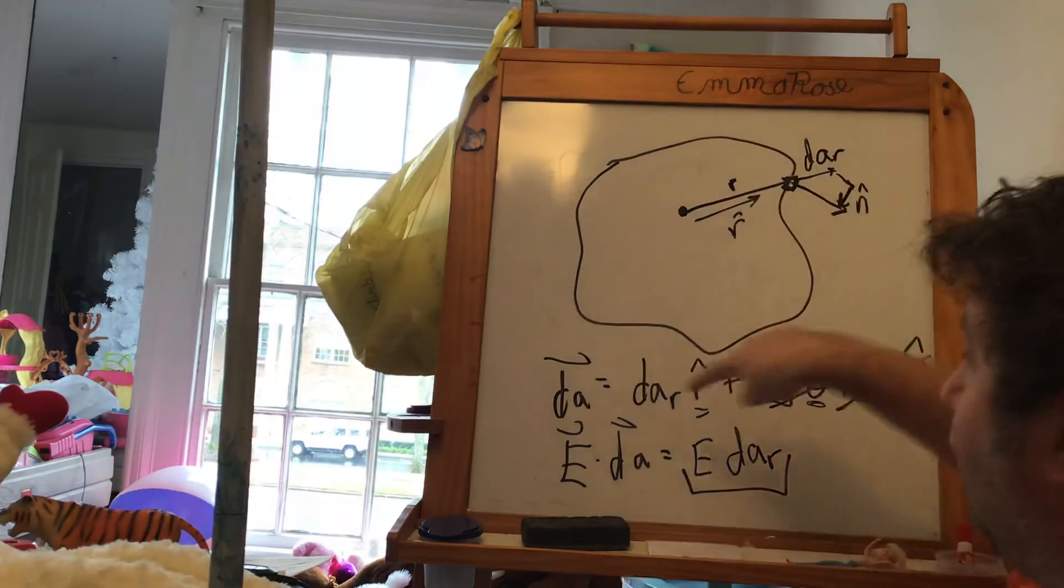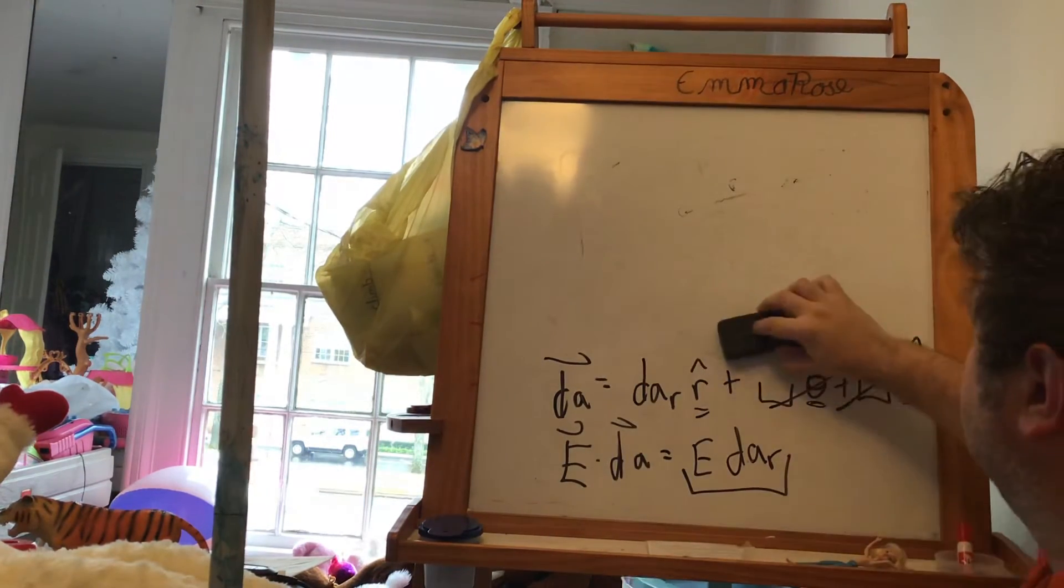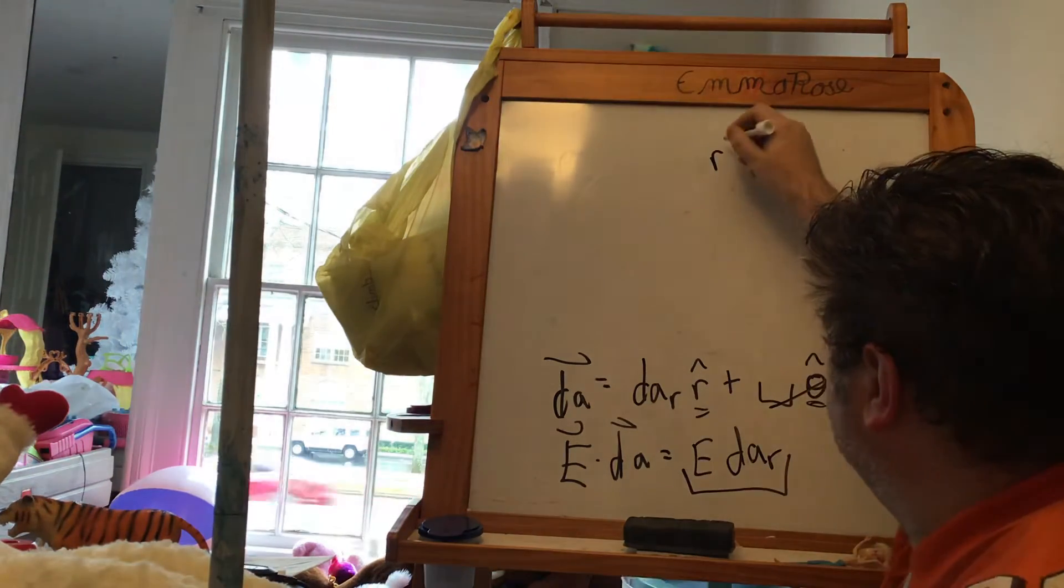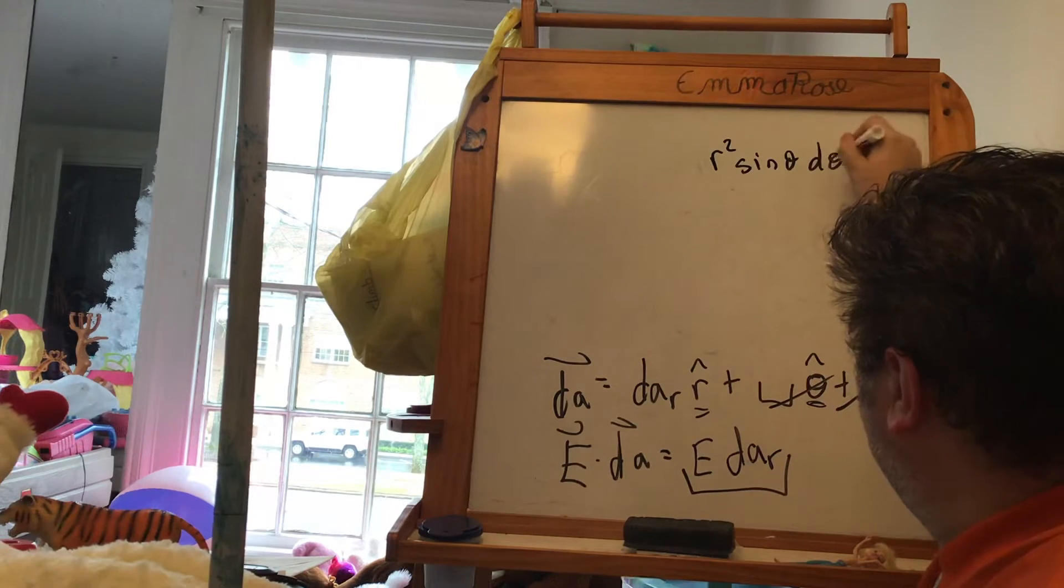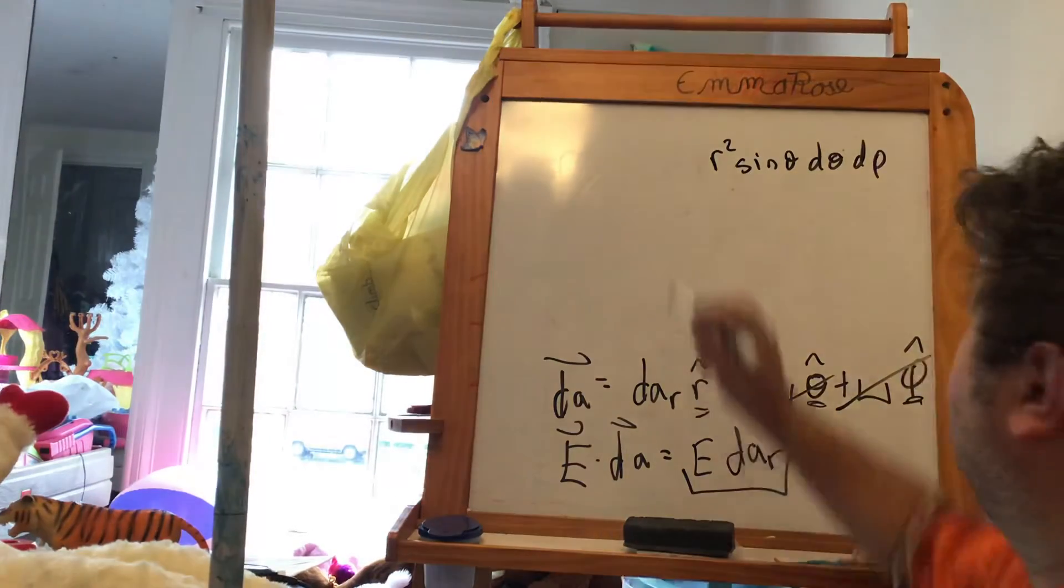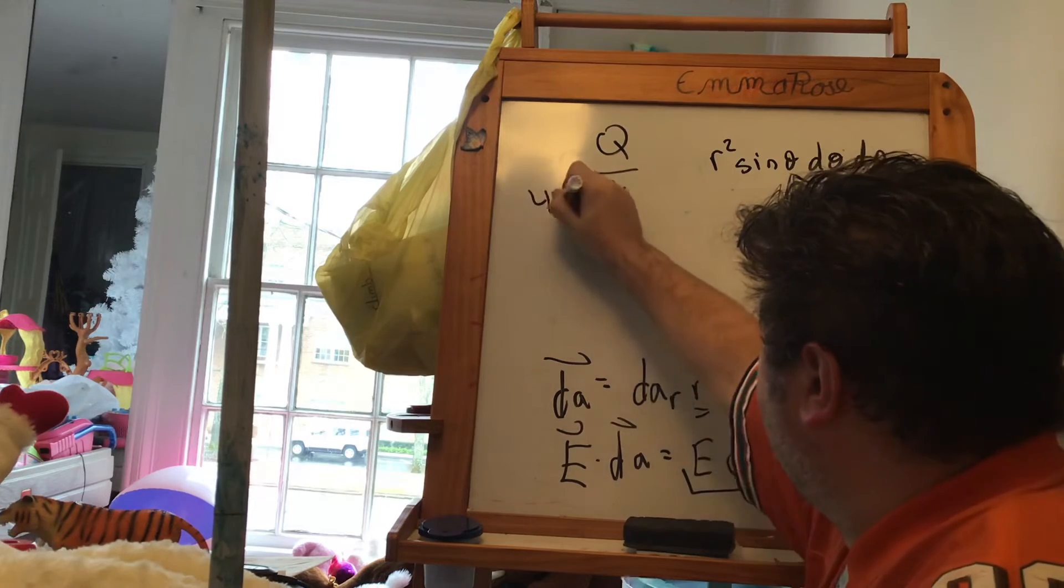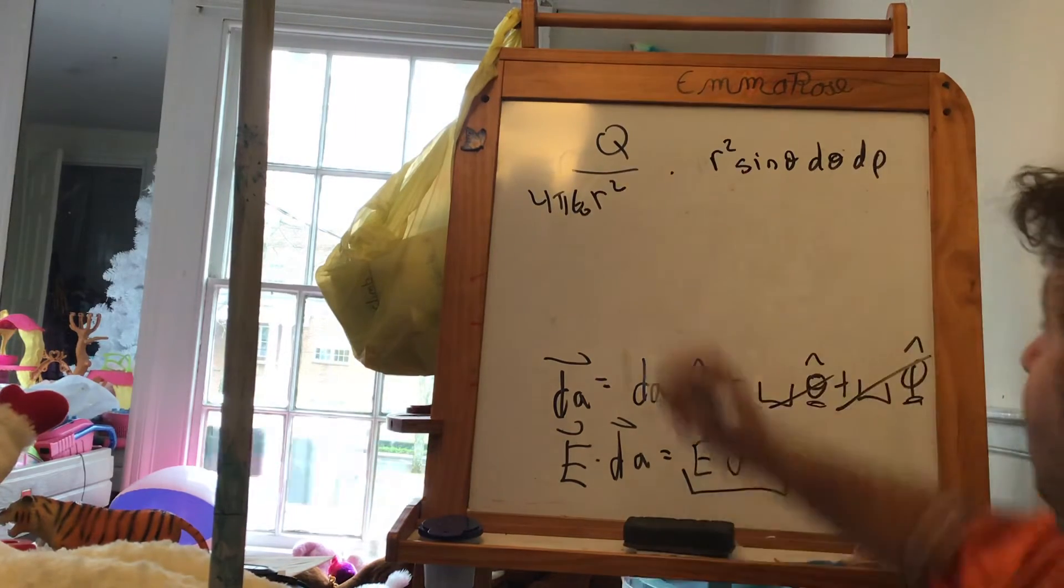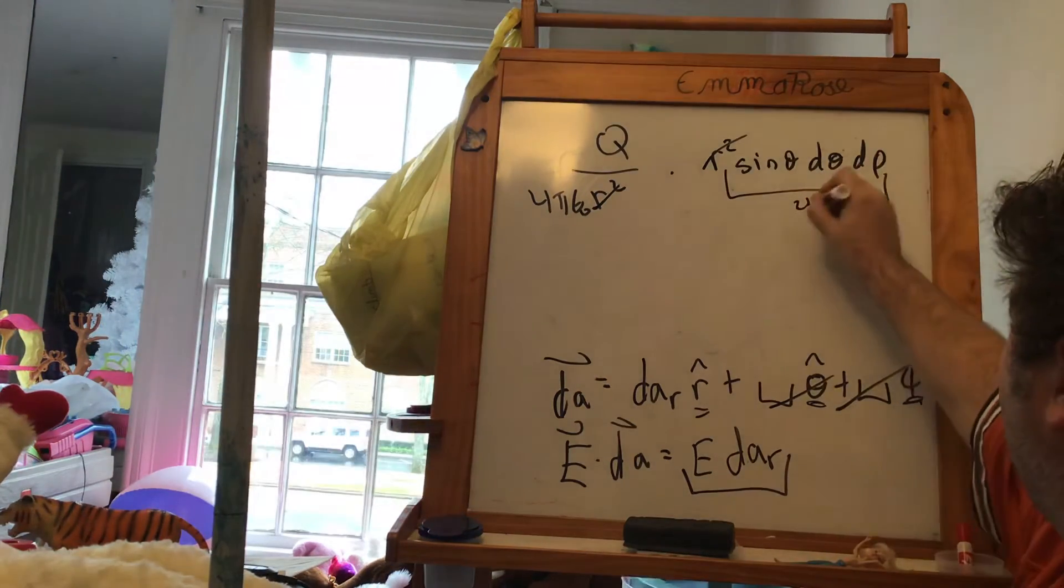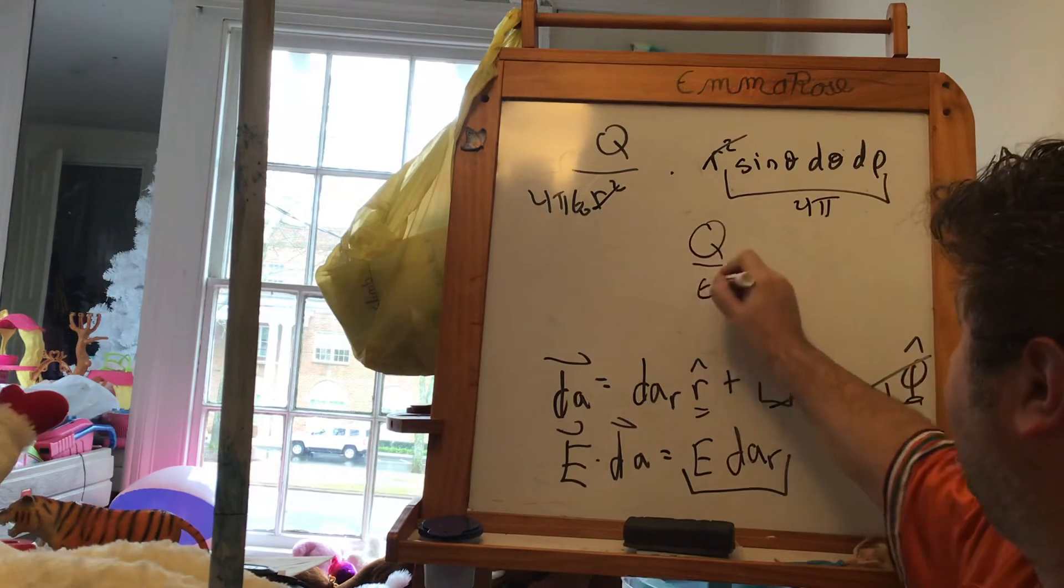Of course, I've got to do it around this whole enclosed shell. But, this dA_R in spherical coordinates is r squared sine theta d theta d phi. And the E for a point charge is q over r squared. There's a 4π epsilon nought here. These r squareds are going to cancel. And when I do this integral here, I get a 4π. So, that gives me q over epsilon nought.